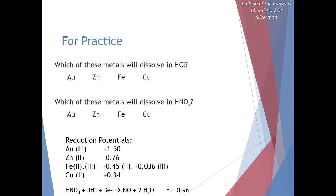Another practice problem: which of these metals will dissolve in hydrochloric acid? This is asking whether a spontaneous redox reaction will occur between hydrogen and any of these metals. We consider whether a metal and hydrogen ions can react to form hydrogen gas and a charged metal species. In each case, hydrogen must be reduced while the metal is oxidized, meaning the metal goes to the anode and hydrogen ions appear at the cathode. For this reaction to be spontaneous, our standard cell potential needs to be a positive number.